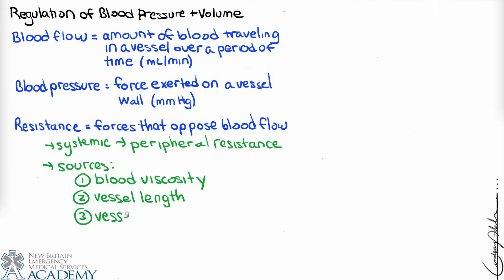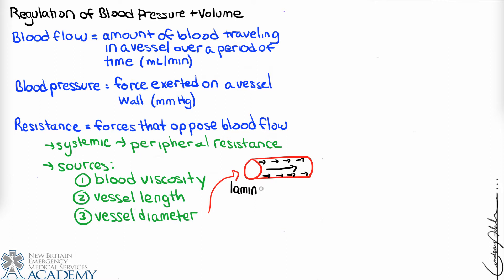Vessel length also increases resistance — a longer vessel means greater resistance. This makes sense because blood pressure in an adult is higher than in a child, since an adult's vessels are longer. Vessel diameter is another factor: the more narrow the vessel, the greater the resistance. In laminar flow, considered normal, blood flows easily in linear streams, with the fastest flow at the center of the vessel and slower flow near the walls.